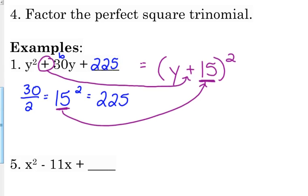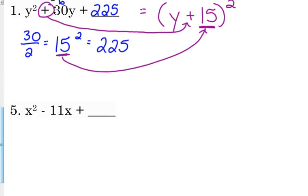Let's look at number 5. x squared minus 11x, let's figure out what needs to go in that blank and how to factor it. So a is 1. We've got just plain x squared, so we're good there.